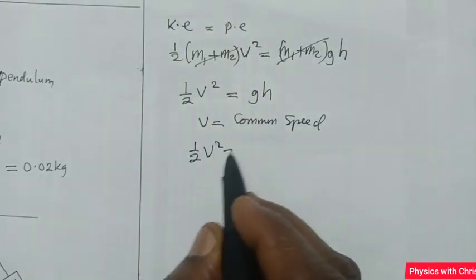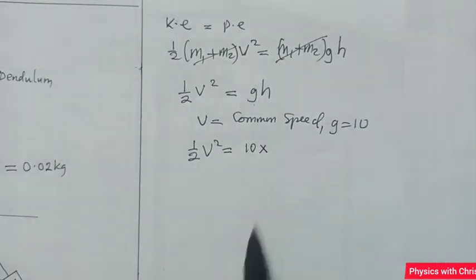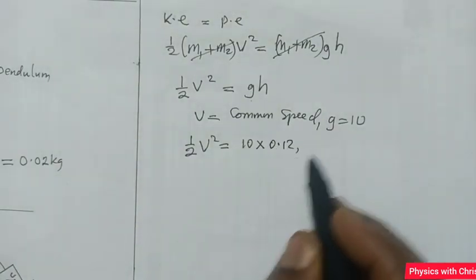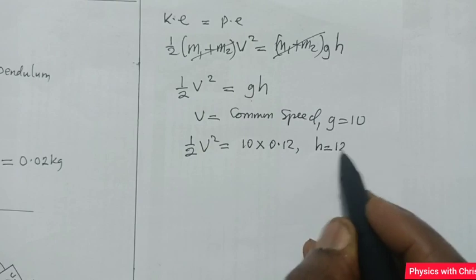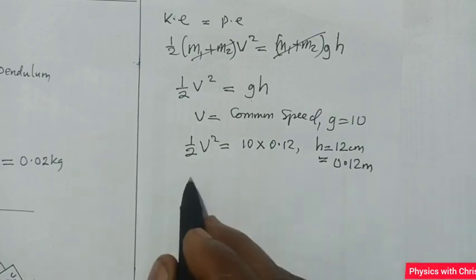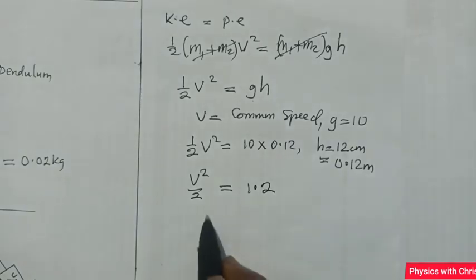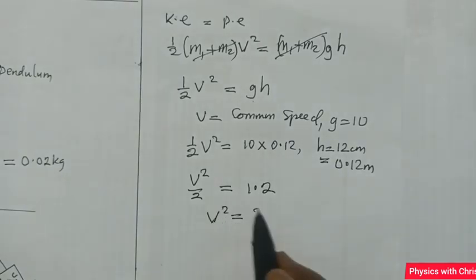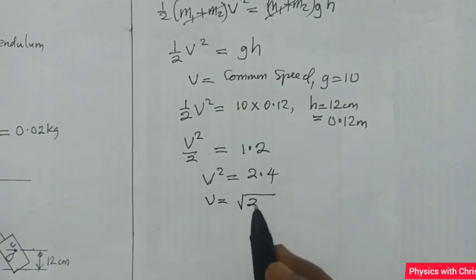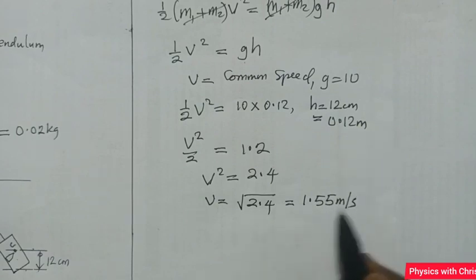Substituting values with g = 10 m/s² and h = 0.12 m (12 cm converted to meters): ½v² = 10 × 0.12 = 1.2, so v² = 2.4. Taking the square root gives the common speed v = 1.55 meters per second.